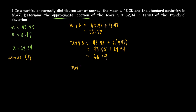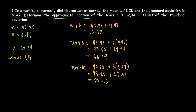Then 43.25 plus 3 times 12.47 — so 3 times 12.47 is 37.41 — so 43.25 plus 37.41 equals 80.66. Now we have the set of scores: 55.72, 68.19, and 80.66. We need to determine the approximate location of 62.34, so we focus on which two scores it falls between. Since 55.72 and 68.19 are closest, 62.34 is between mean plus 1 standard deviation and mean plus 2 standard deviations.